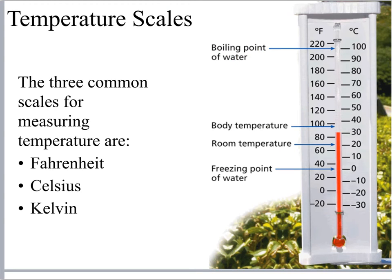As for temperature scales, we have three main ones used commonly. Most of the world uses Celsius, but the SI unit for temperature is actually Kelvin, which is on the scale of absolute zero. However, some places — like the United States and only a few others — use the Fahrenheit scale. Here's a picture showing both scales together; zero in one doesn't equal zero in the other.